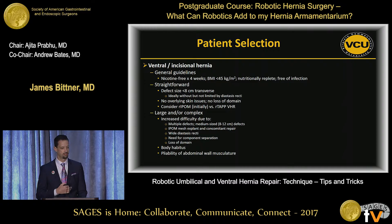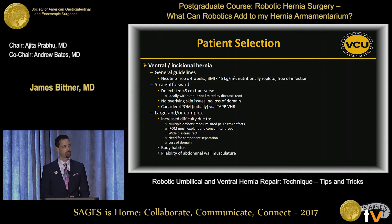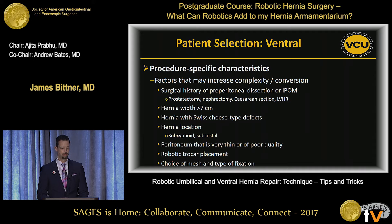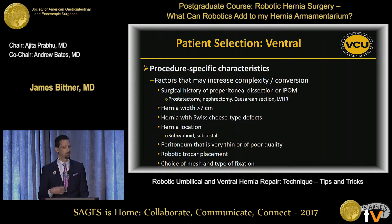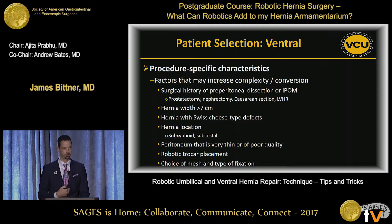The patient selection for robotics versus open ventral hernia repair really shouldn't be all that different. If the patient needs a transversus abdominus release and you can do it robotically or open, that should be the consideration. It shouldn't simply be because you want to use a robot that you do a repair you might not otherwise do. Some things that make these robotic hernia repairs more difficult include multiple defects, previous mesh implantation, or noncompliant abdominal walls because of the need for pneumoperitoneum.